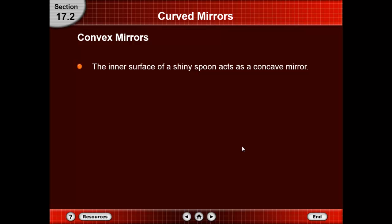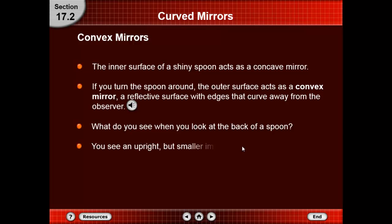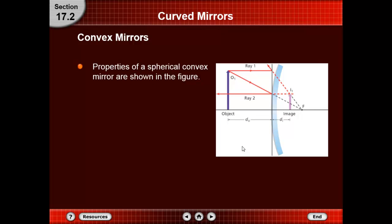Just as a concave mirror acts like the inner part of a spoon, if you turn the spoon around the outer surface acts as a convex mirror — a reflective surface with an edge that curves away from the observer. The inner part of the shiny spoon acts as a concave mirror; the outer part acts as a convex mirror. When you look at the back of the spoon you see an upright but smaller image of yourself.